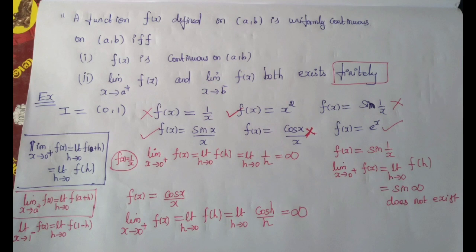The limit as x tends to a-plus of f(x) and the limit as x tends to b-minus of f(x) must exist. So the right limit of a and the left limit of b, and the function f(x) must be finite. This is the necessary and sufficient condition for f to be Uniformly Continuous on open interval (a, b).